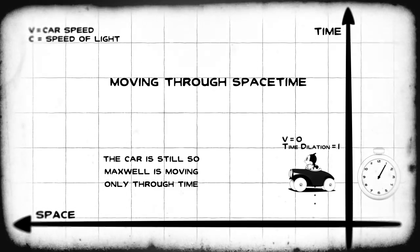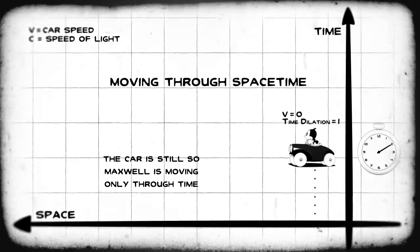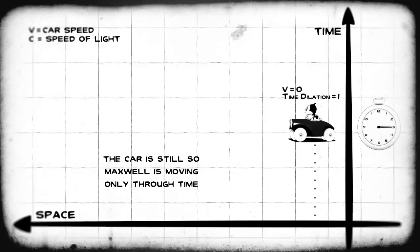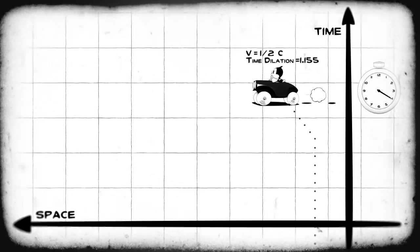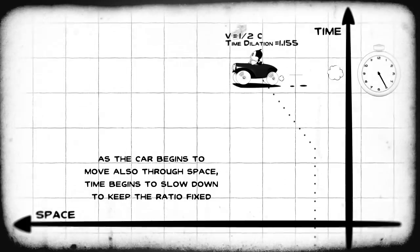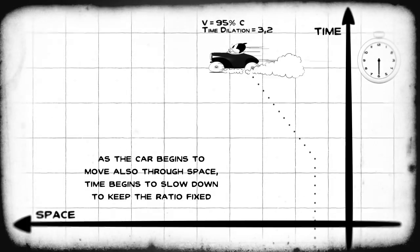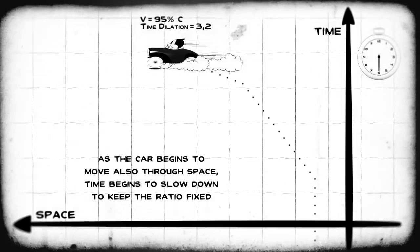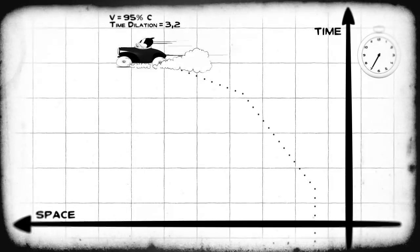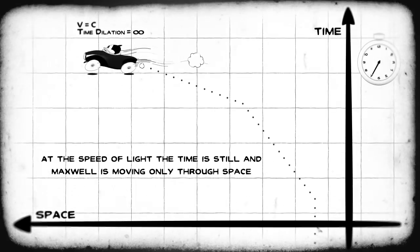Every object always travels through spacetime at the speed of light. When the object is at rest, it only travels through time. As it begins to move and speed up through space, it slows down through time. The ratio is always equal to c. When it reaches the maximum speed, that of light, time stops.